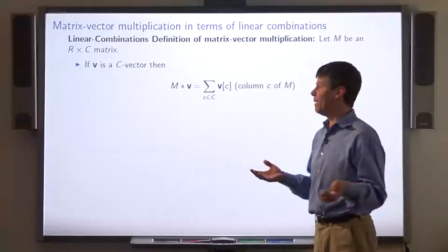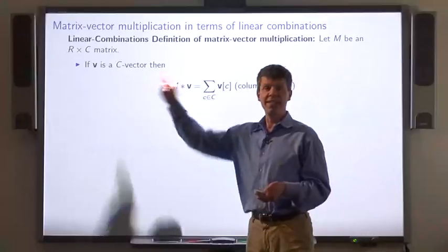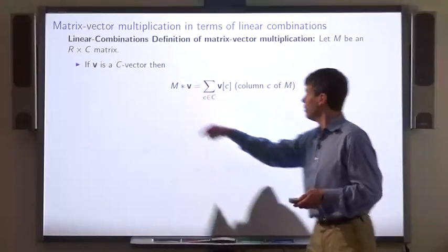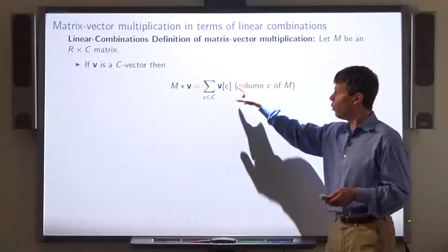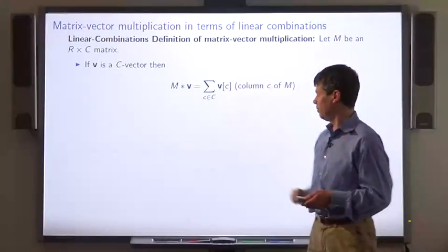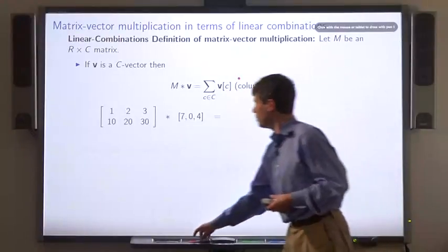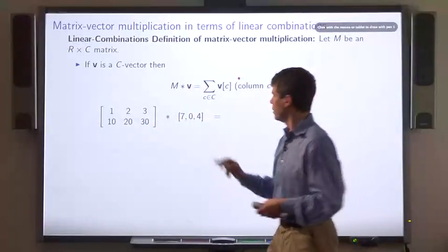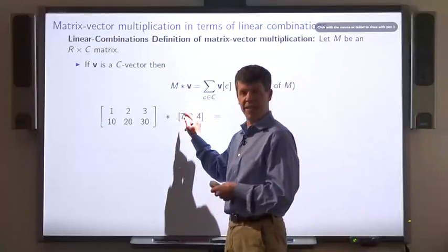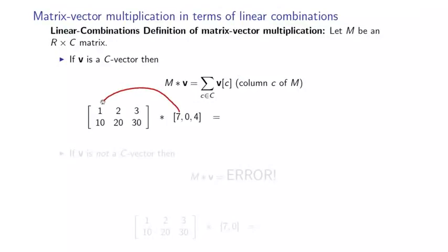Given an R by C matrix M, if V is a C vector, then the product M times V is the linear combination of the columns of M where the coefficients are given by the entries in V. For example, given this matrix and this vector, we take the product by multiplying the first entry of the vector by the corresponding column, the second entry of the vector by the second column, and the third entry by the third column.